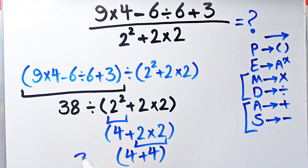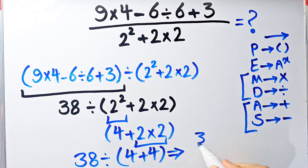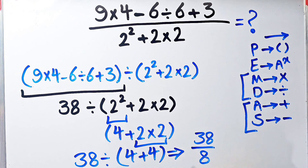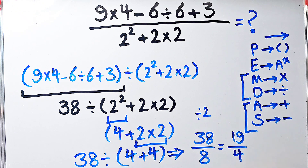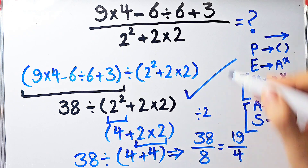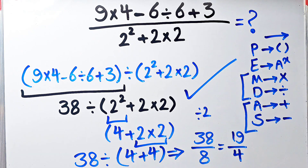4 plus 4 equals 8. Now we have 38 divided by 8. The final answer of this question equals 38 over 8. We can simplify both by 2: 38 divided by 2 equals 19, and 8 divided by 2 equals 4. The final answer of this question equals 19 over 4. Thanks for watching guys — to see more math videos, subscribe to the channel. Goodbye!